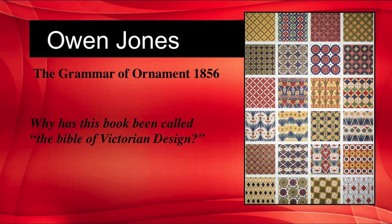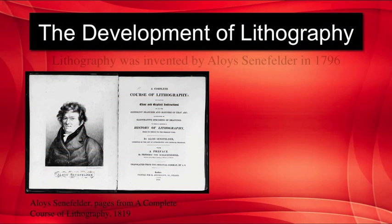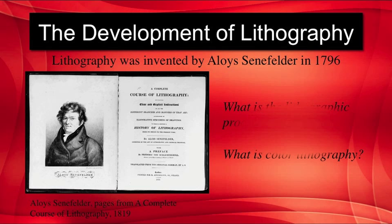The Bible of Design for the Victorian era was called The Grammar of Ornament, published in 1856 by Owen Jones. I'd like you to look into this book and tell me why it has been called the Bible of Victorian Design. The development of lithography began around 1796 by a Bavarian inventor named Alois Senefelder. I want you to look into what the lithographic process is and then tell me what color lithography is.